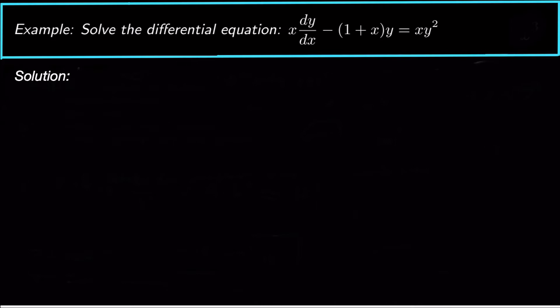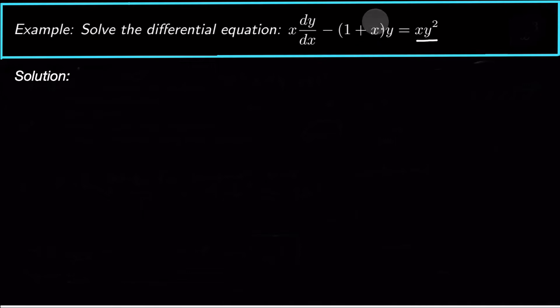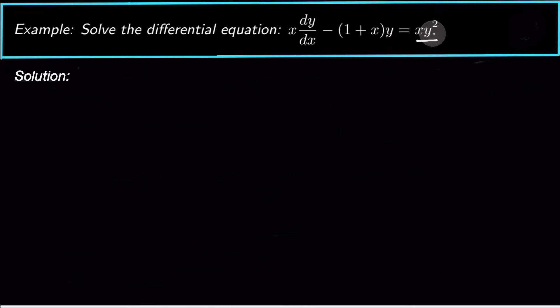Today we are looking at solving a Bernoulli differential equation. We know it's a Bernoulli differential equation because of y squared on the right-hand side — the equation is nonlinear and has a function y squared on the right. Basically, if you have something that looks linear on the left but the right-hand side has y to a power, then you know it's a Bernoulli differential equation.